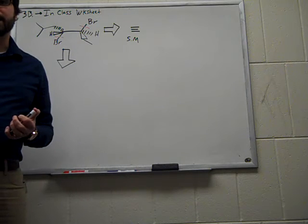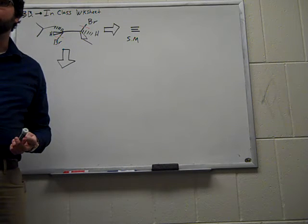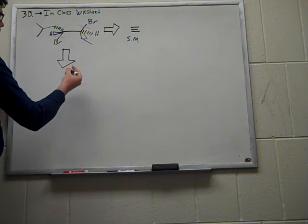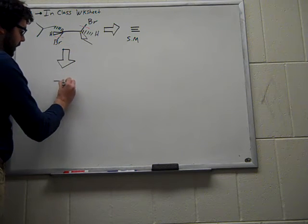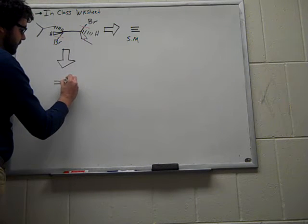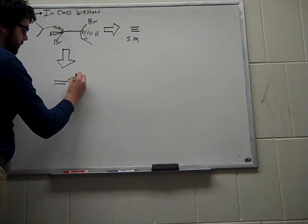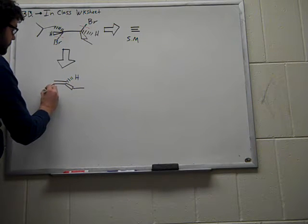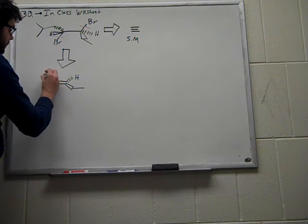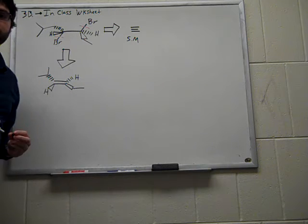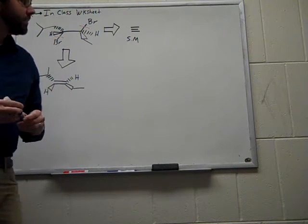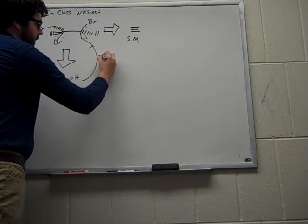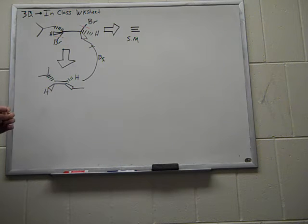We know from our work with alkenes that bromine, Br2, when added to an alkene, adds it in anti-fashion. So we can envision synthesizing this dibromine from the following alkene shown there. And so we can envision then adding in the forward direction the addition of Br2.